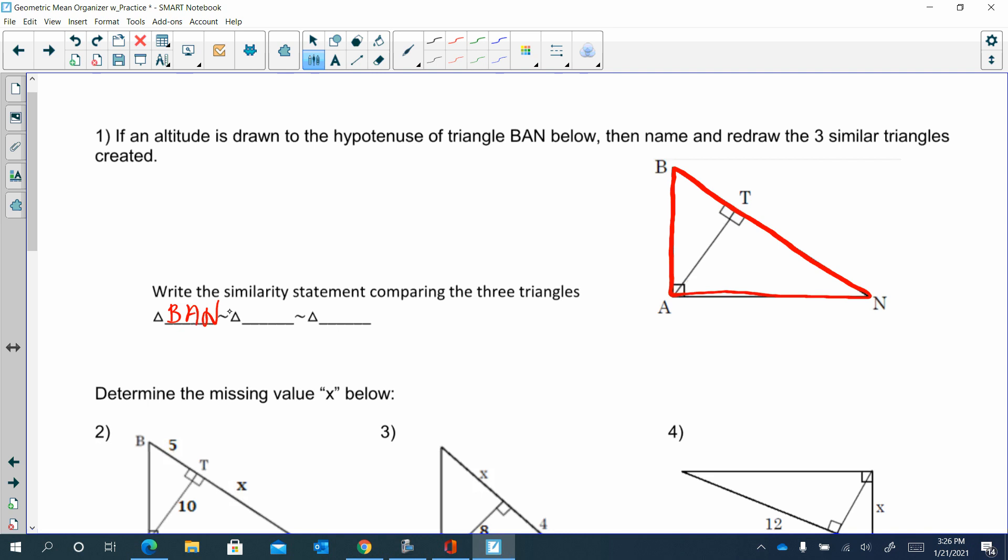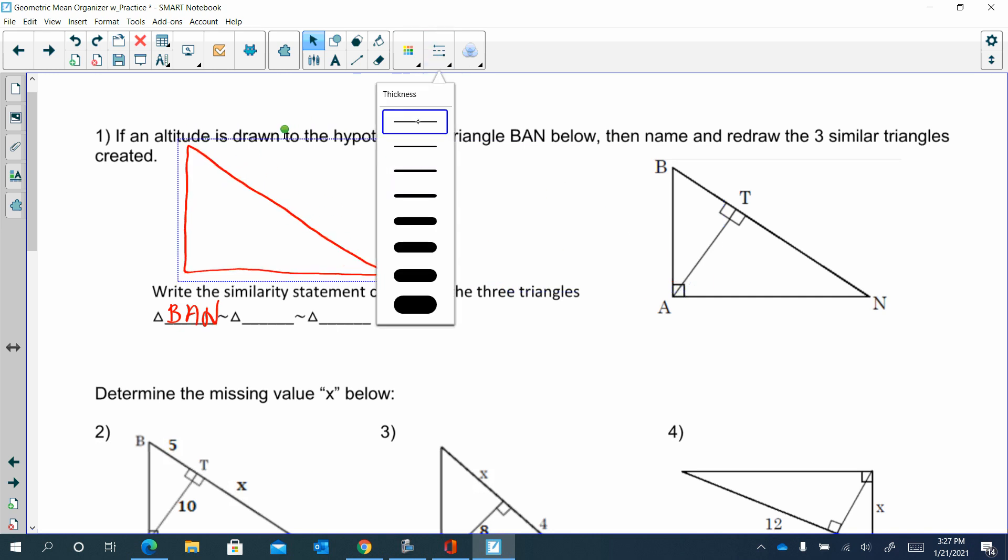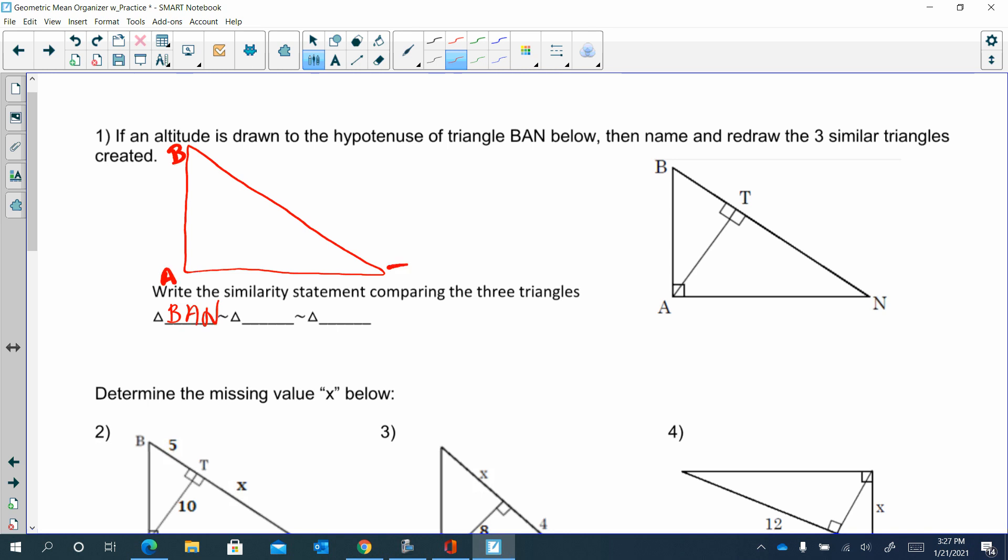Notice that A is the right angle here. So if you want to redraw that here, and then just label it, we got B, A, N. Let me fix that.